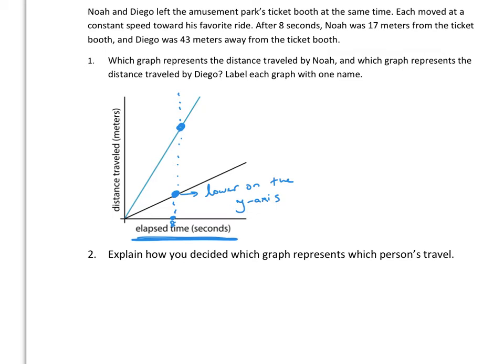Okay, that means of the two numbers given to us, 17 meters and 43 meters, this one must be 17 meters. So that means this line represents Noah's speed.